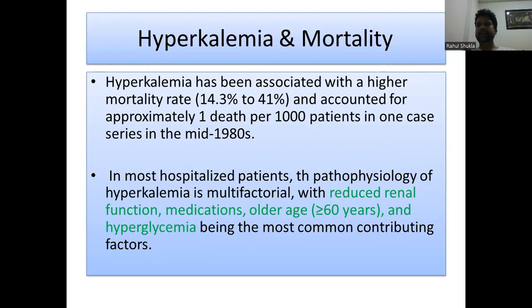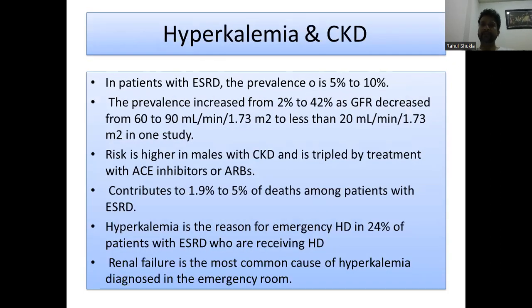Hyperkalemia is associated with a higher mortality rate of 14.3 to 41 percent, accounting for approximately one death per thousand patients in the mid-1980s. In most hospitalized patients, the pathophysiology is multifactorial, with reduced renal function, medications, age over 60, and hyperglycemia being the most common contributing factors. In CKD patients with ESRD, prevalence is around 5 to 10 percent, increasing from 2 to 42 percent as GFR decreases from 60-90 to less than 20 mL/min/1.73 m². Hyperkalemia accounts for emergency hemodialysis in 24 percent of ESRD patients and is the most common cause diagnosed in the emergency department.